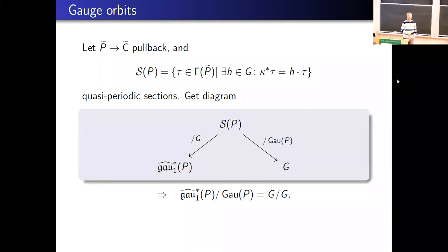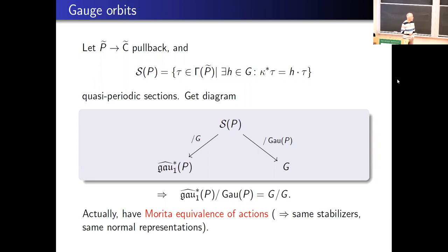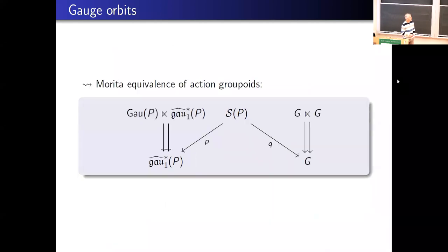There's actually a little bit more than a one-to-one correspondence of orbits — there's a Morita equivalence of actions. Not only are the orbits in one-to-one correspondence, but the stabilizers are isomorphic and the transverse directions to the stabilizers are the same. Another way of saying this: you get a Morita equivalence of the corresponding action groupoids. On the right we have the action groupoid for the conjugation action, on the left the action groupoid for the gauge action, and those two action groupoids are Morita equivalent.